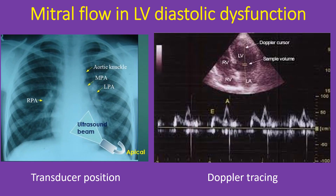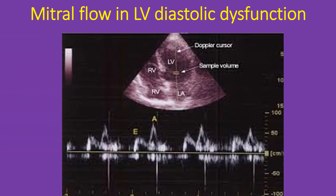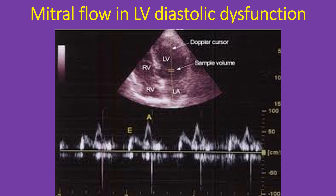Doppler interrogation of the mitral valve is usually done from the apex through the apical 4-chamber view. The transducer is placed directly over the apex beat and the echo beam is directed upwards. A good 4-chamber view of the heart is obtained showing all 4 chambers and both atrioventricular valves. The Doppler cursor is then aligned along the long axis of the left ventricle passing through the mitral valve, and the sample volume is placed just distal to the mitral valve to pick up flow in the left ventricular inflow.